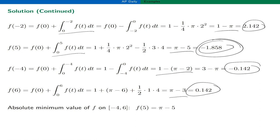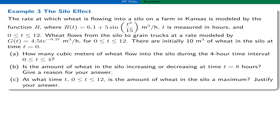One more example: a contextual, calculator-active applied problem. Wheat is flowing into a silo at a rate modeled by the function capital R, and flowing out into grain trucks at a rate modeled by the function g. There are 10 cubic meters of grain in the silo at time t equals 0. I have several questions associated with this setup.